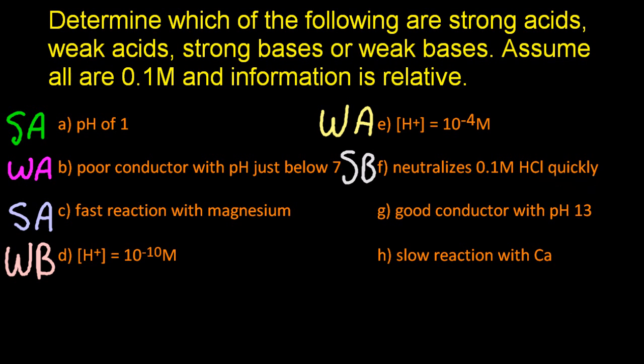G, if it's a good conductor, it must have lots of freely moving charged particles and be fully dissociated, so it's strong. pH of 13, that's basic.